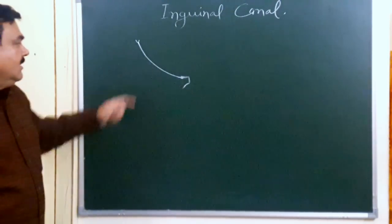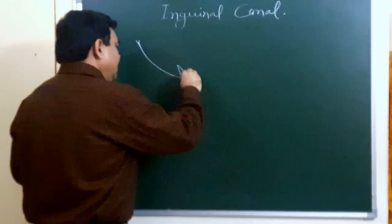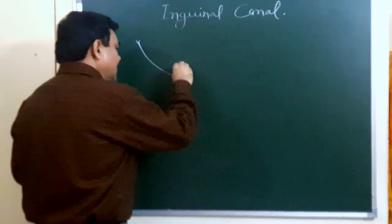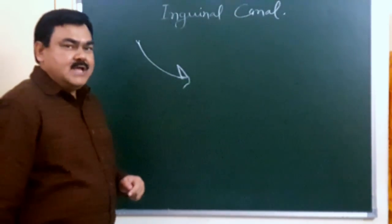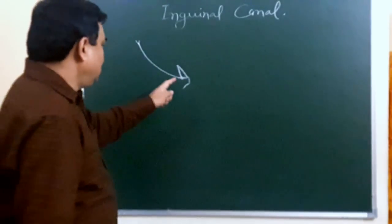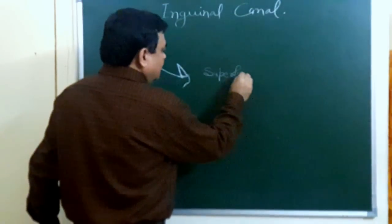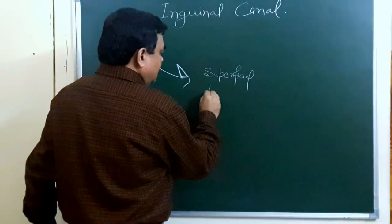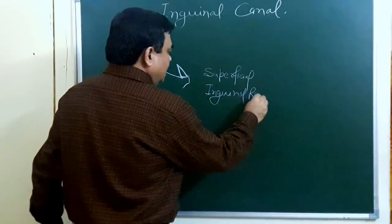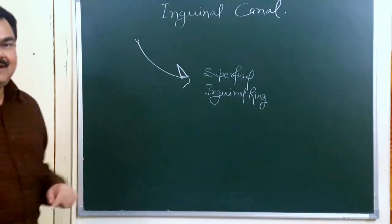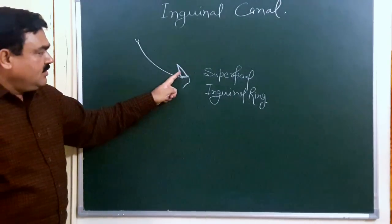Here is a triangular opening, which is known as the superficial inguinal ring. This is the superficial inguinal ring. This ring has a base, an apex, a lateral boundary, and a medial boundary.